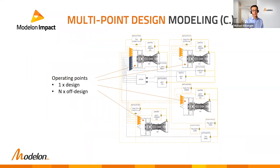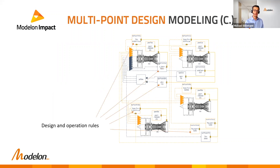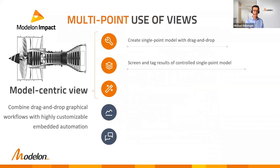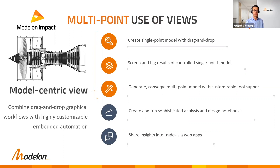In a Modelica authoring tool, these models look like instances of your plant model at different operating conditions. All of this builds on the established notion of design point and off-design computations — there is one on-design instance and several off-design models. They are coupled to each other through utility blocks that contain design rules and operation rules to ensure consistency of the design across cases.